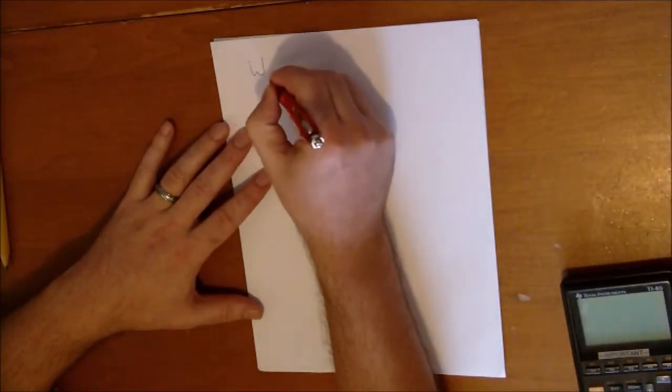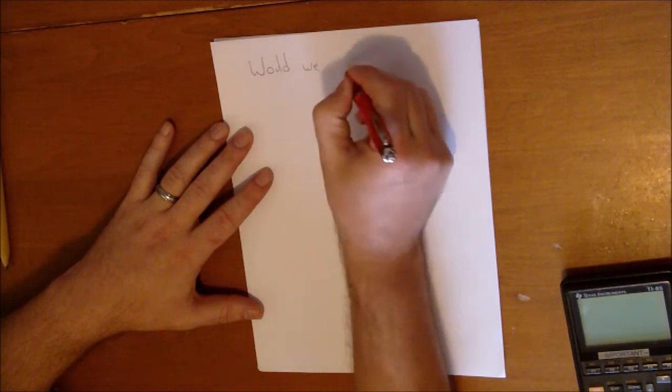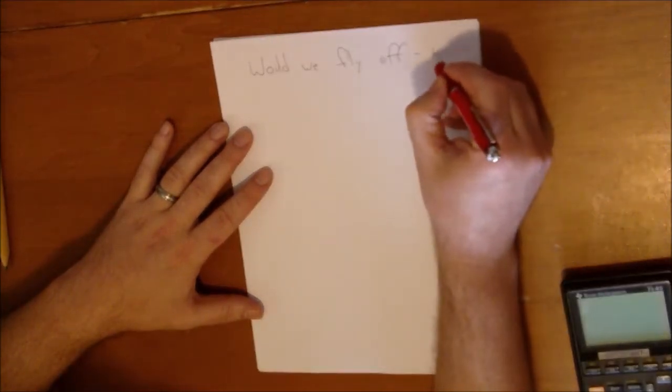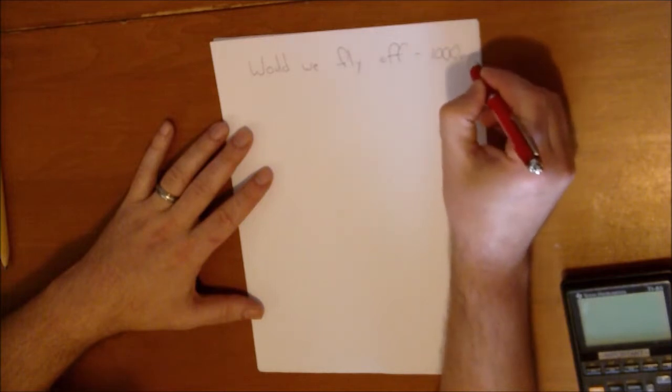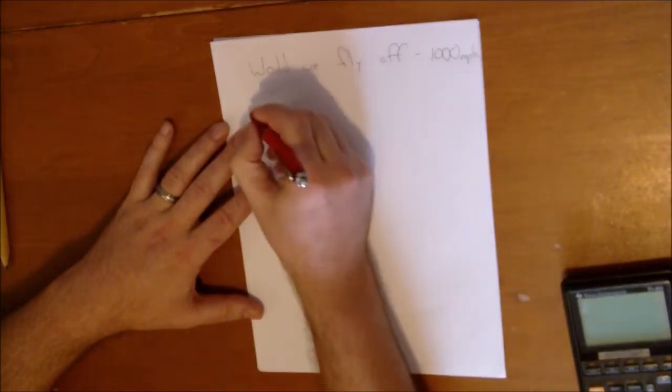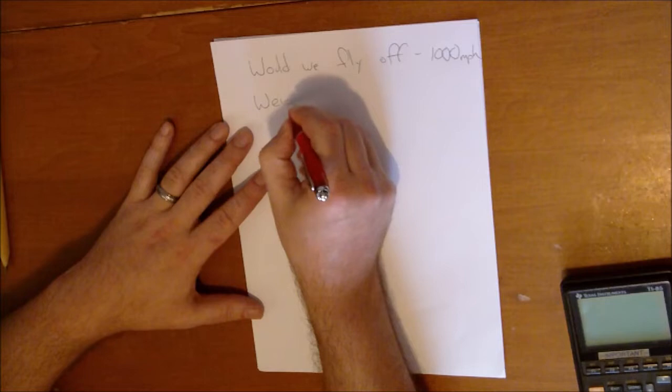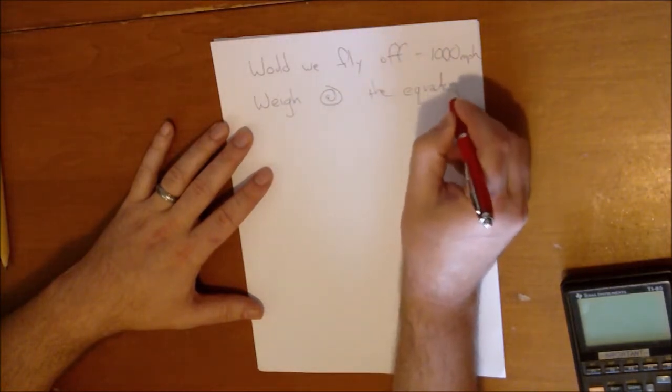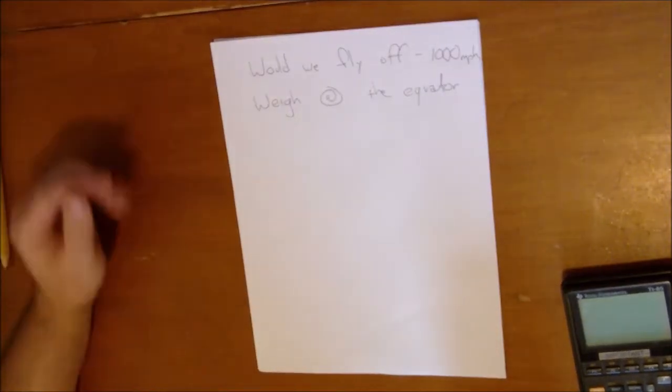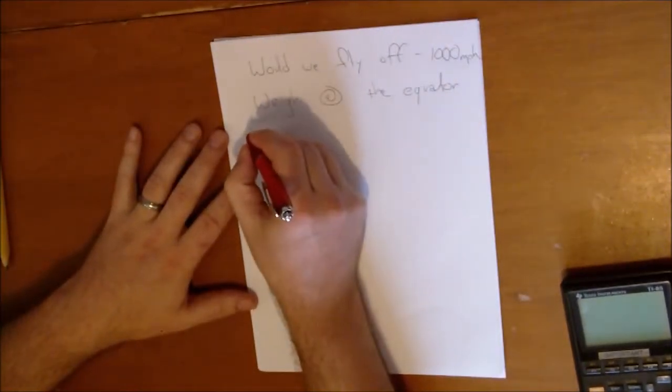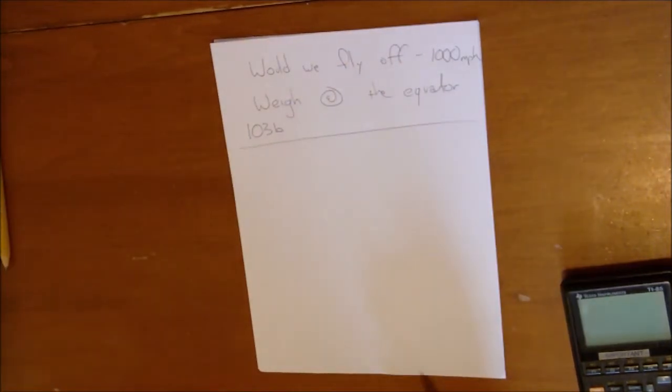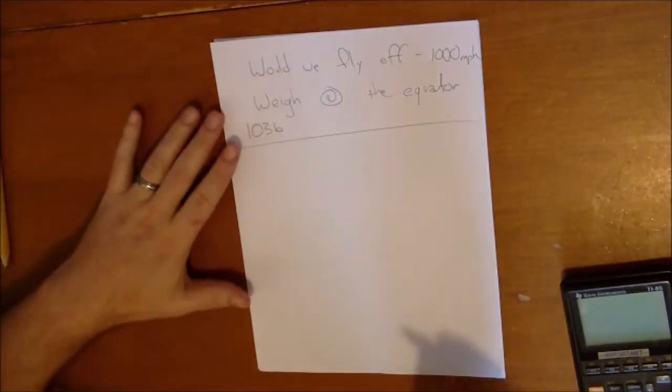Today I'll make a short video answering two questions. Would we fly off at the equator, since after all it is going faster than a thousand miles an hour? And second, how much would we weigh at the equator versus the poles? Both of these questions are answered in FlatMath 103b, but I'm going to make a stand-alone video here, and hopefully just in a few minutes we can get it accomplished.